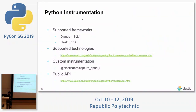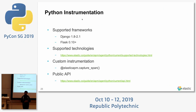From the Python instrumentation point of view, we support Django and Flask frameworks, with more on the roadmap. You can also do custom instrumentation — if you want to monitor a specific method doing some processing, you can use a capture span annotation. If nothing works or you have your own framework, you can use the public API to build support for your own thing — you just need to follow the standard.